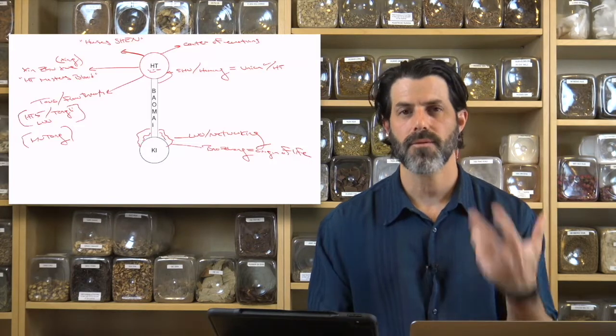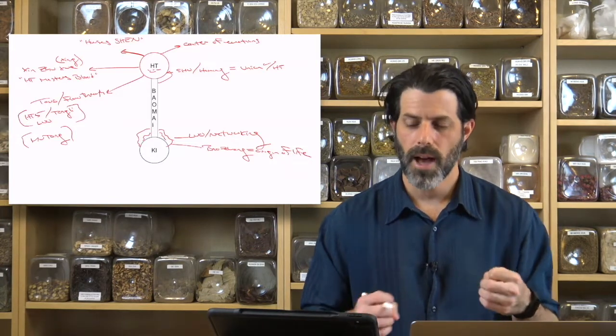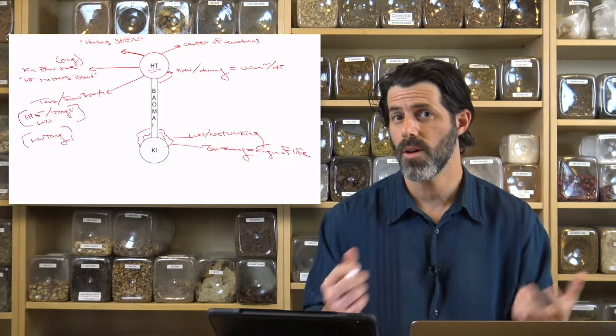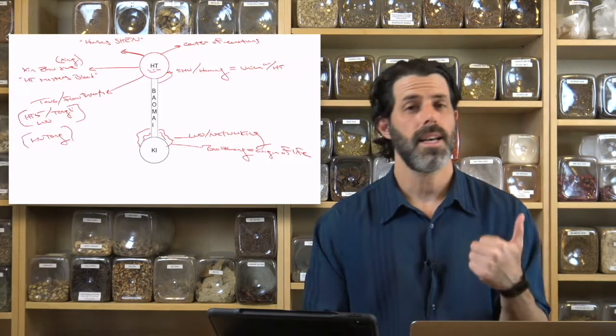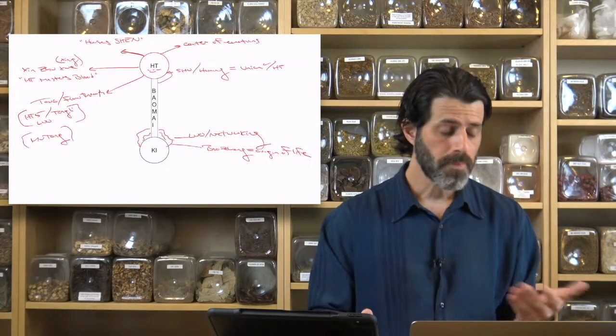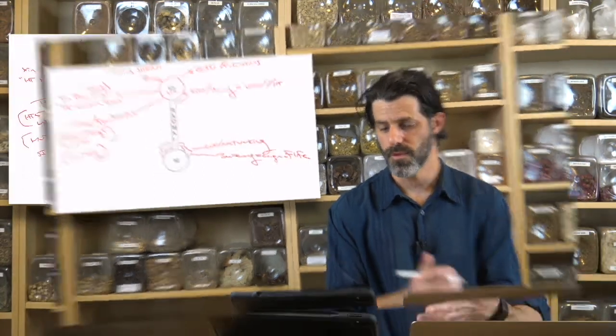Mu Tong has the power of unblocking the flow: unblocking the flow of urine, the menses for amenorrhea, and the breast milk.